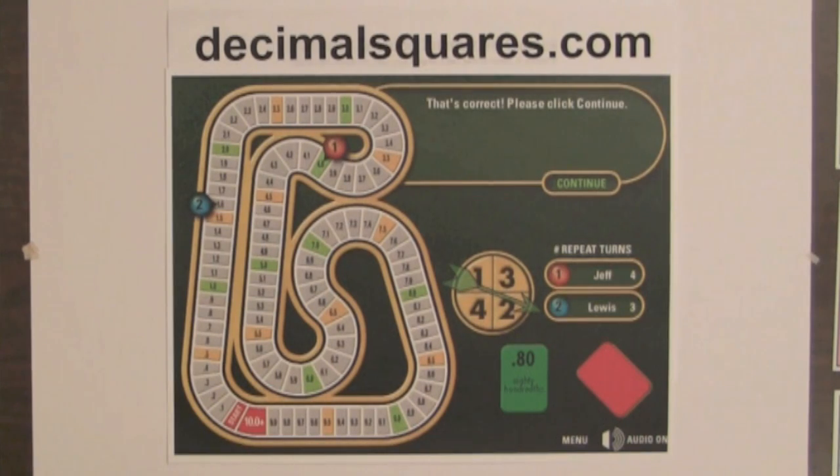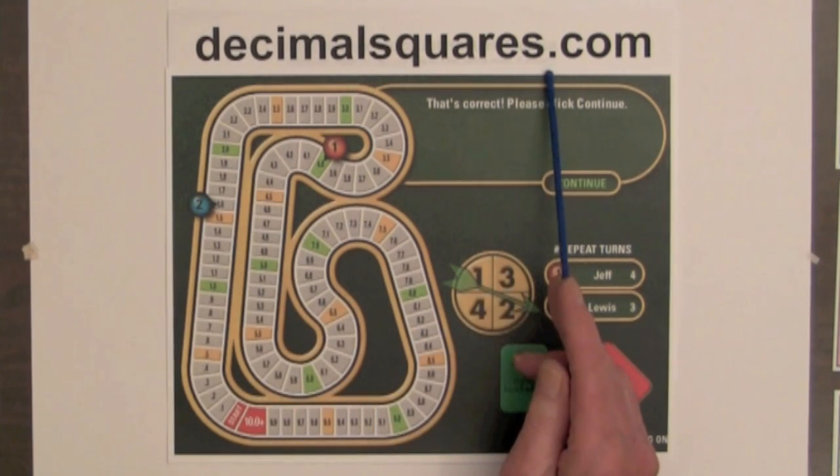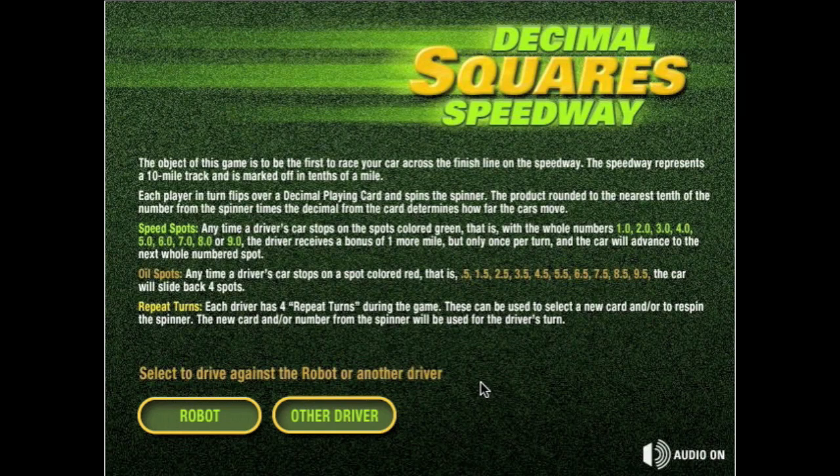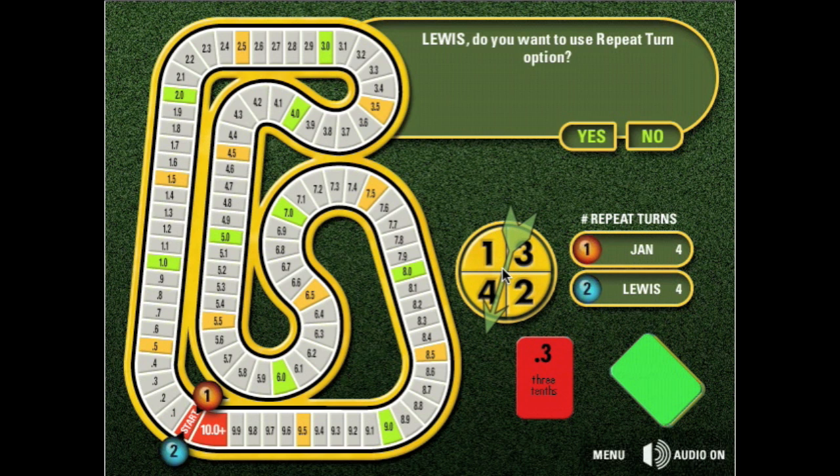We will end this video with a description of the game Decimal Squares Speedway from DecimalSquares.com. This speedway represents a 10 mile racetrack marked off in tenths of a mile. A player flips a card, spins a spinner, and the card's progress is the product of these numbers. Lewis has a decimal point 3 and spins a spinner and gets a 4. So we multiply 4 times point 3.